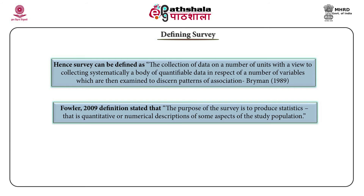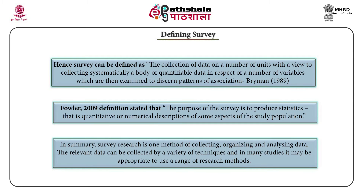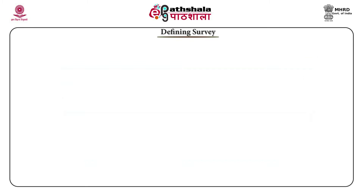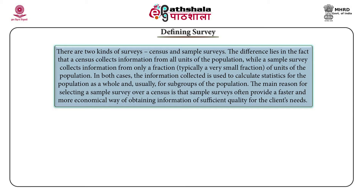In summary, survey is one method of collecting, organizing and analyzing data. The relevant data can be collected by a variety of techniques, and in many studies it is appropriate to use a range of different methods. There are two kinds of survey: census and sample survey. The difference lies in the fact that the census collects information from all units of the population, while the sample survey collects data on a fraction of the units of the population that is representative of it. The main reason for selecting a sample survey over a census is that sample surveys often provide a faster and more economical way of obtaining information of sufficient quality.